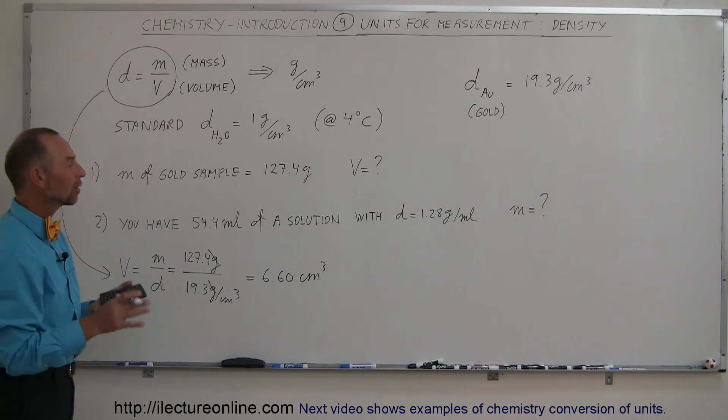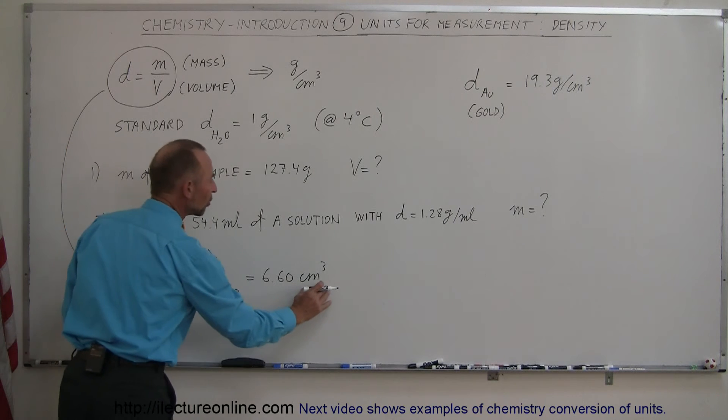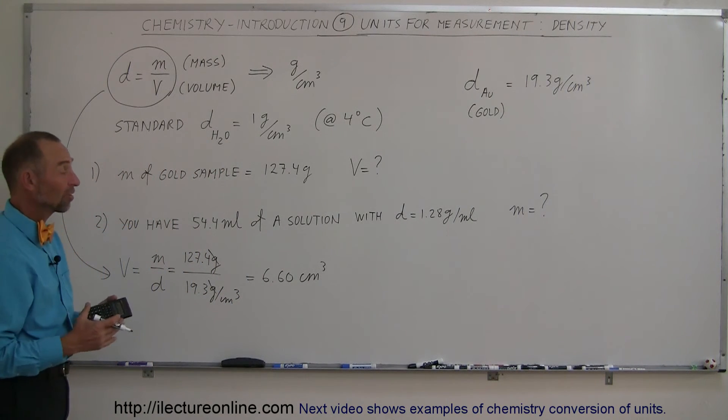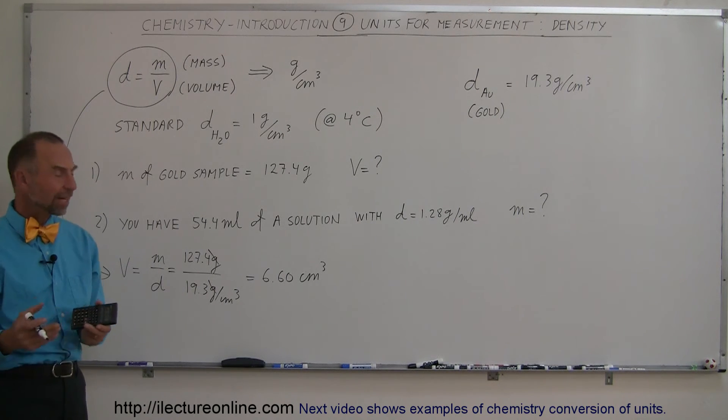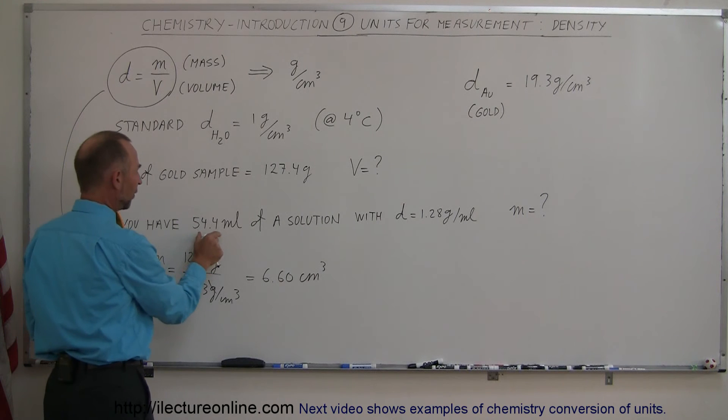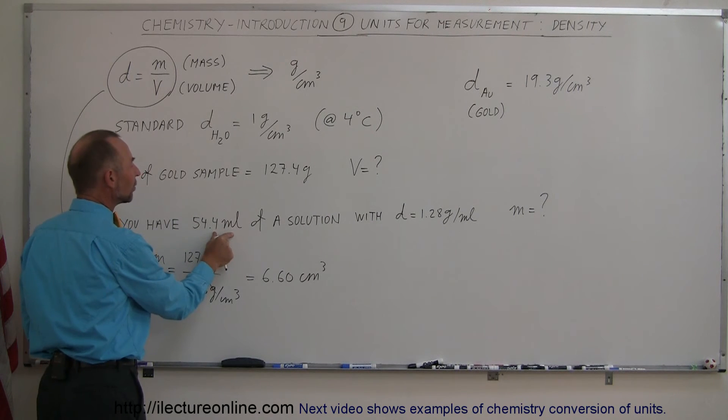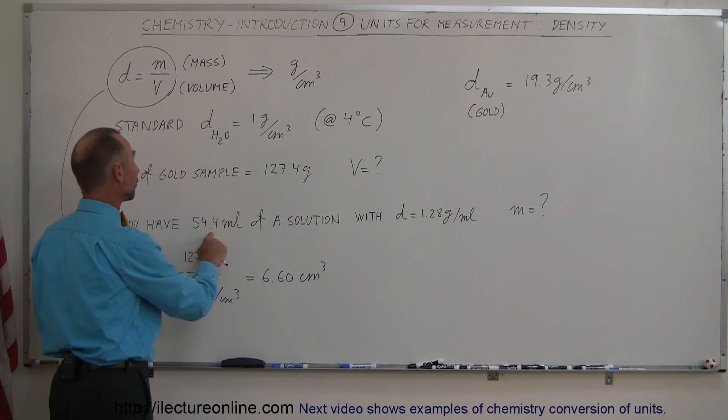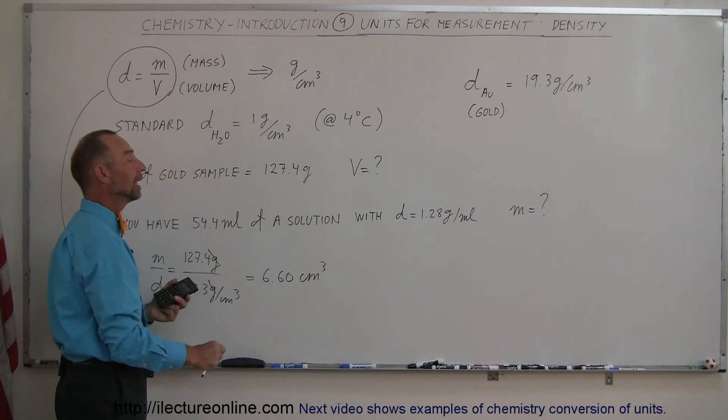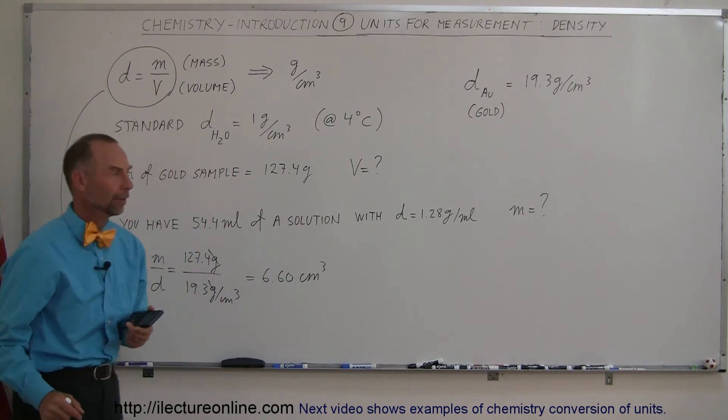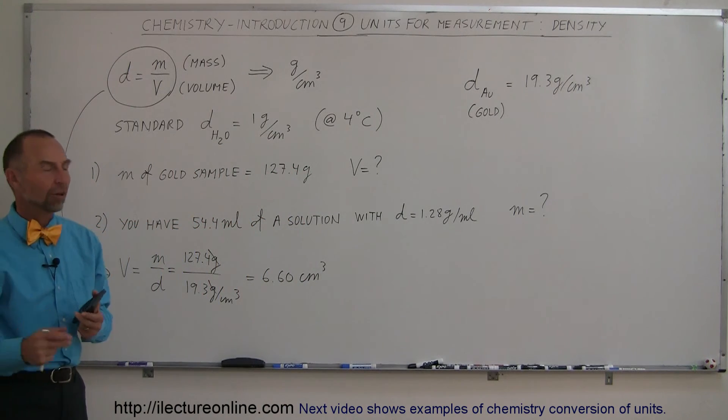Typically when dealing with solids, volume is expressed in cubic centimeters. When dealing with liquids, volume is often expressed in milliliters or liters. As our next example, we have 54.4 milliliters of a solution with a density of 1.28 grams per milliliter. What's the mass of that solution?